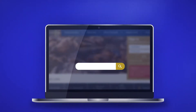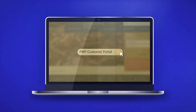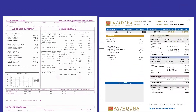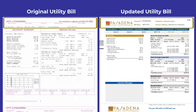Ready to experience all the features in the new customer portal? Registering is as easy as one, two, three. First, locate a copy of your most recent utility bill. You may have received an updated utility bill which has been improved to make it easier to understand. Both the original or updated utility bill will provide the same key information needed for registration.